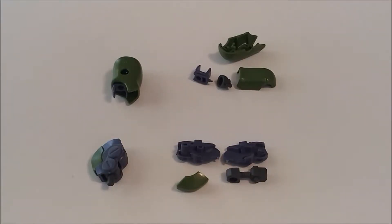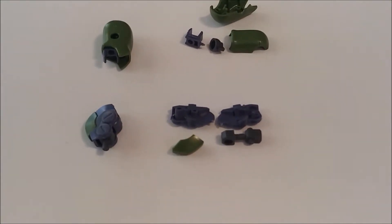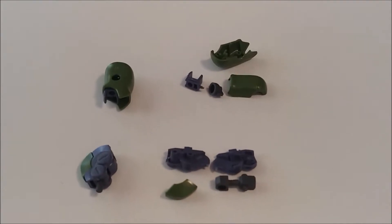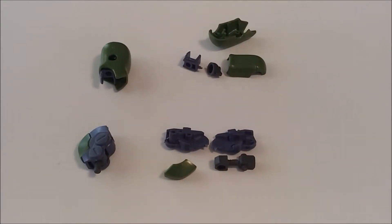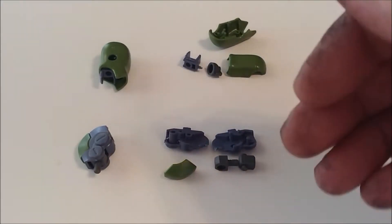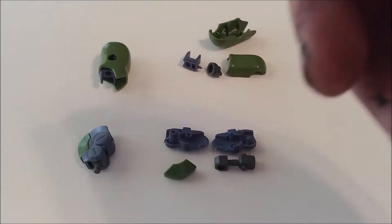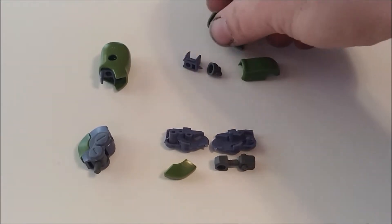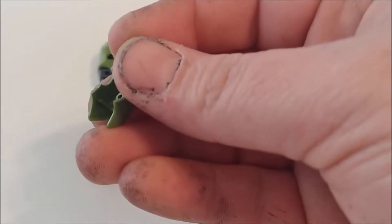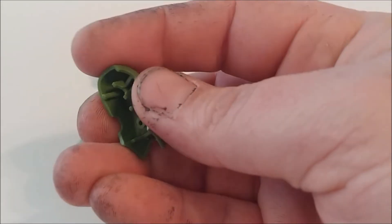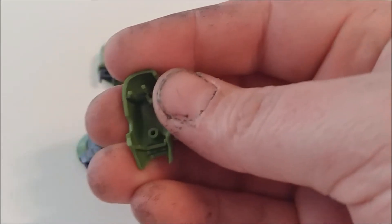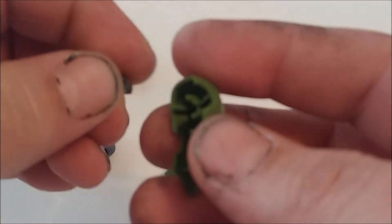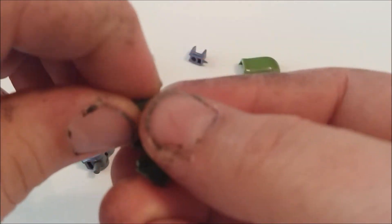Alright, next we have the knee joint and the upper leg. These are two separate pieces but I'm just gonna build them together. Let's start with the upper leg. You've got your ball joint poly cap for up here.